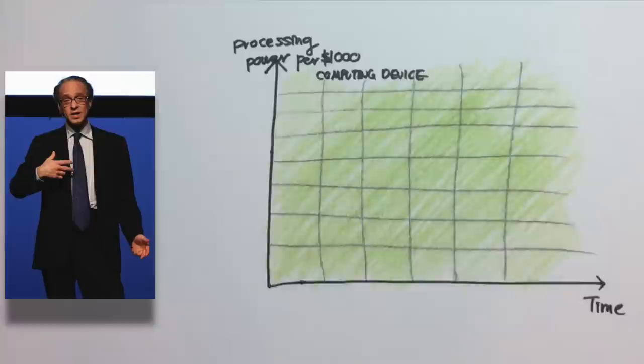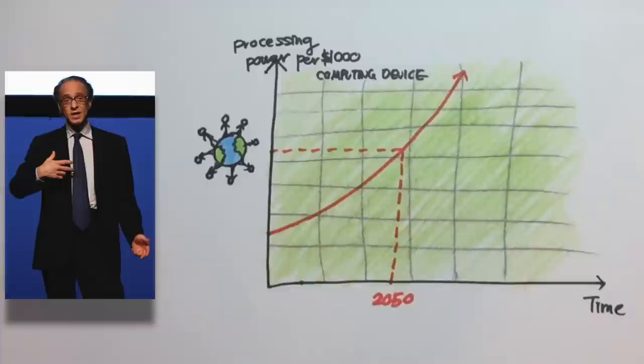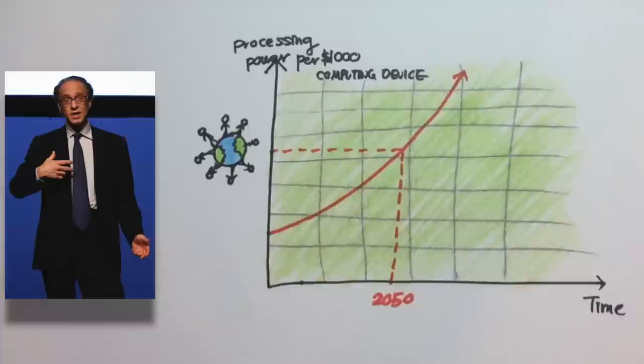Ray Kurzweil, a computer scientist and futurist, has suggested that by the year 2050, $1,000 worth of computing device would equal the processing power of all human brains on Earth.